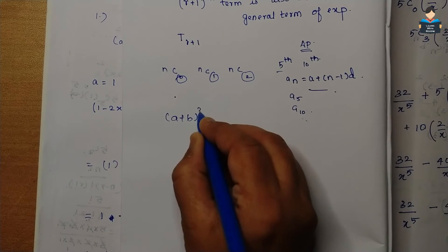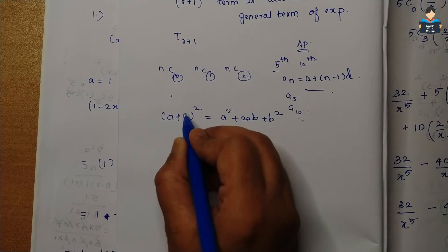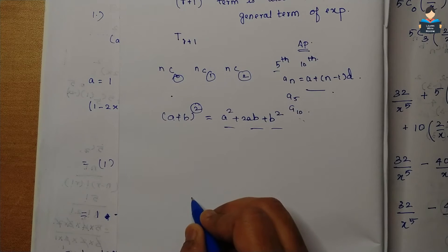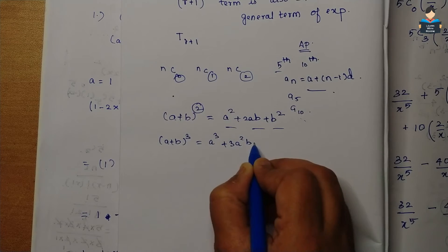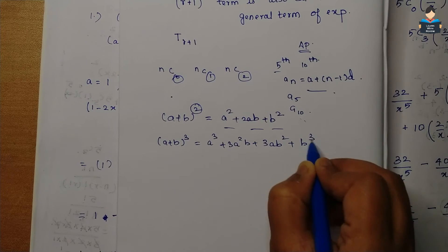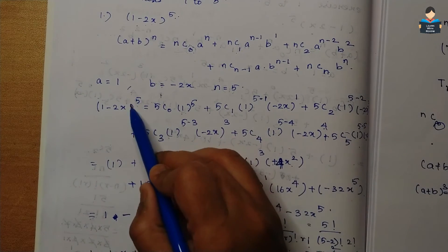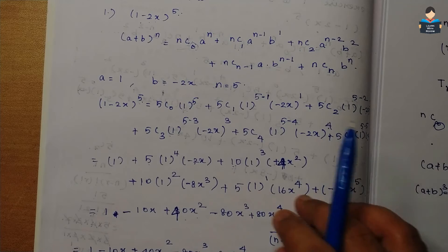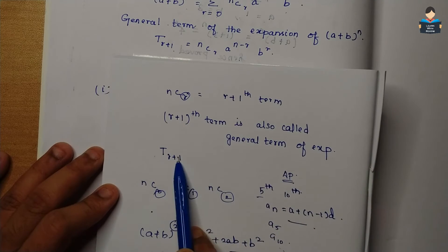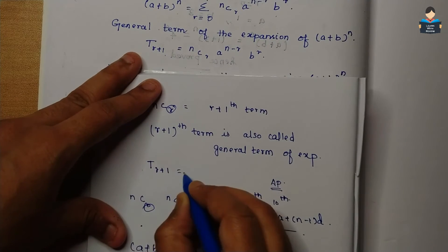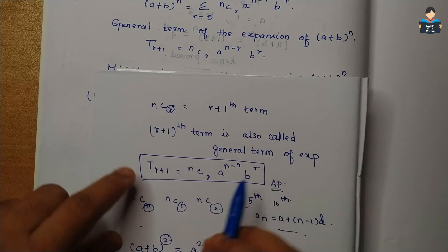We have (a + b) whole square formula: a² + 2ab + b², and n = 2 gives 3 terms. For (a + b)³: a³ + 3a²b + 3ab² + b³, and n = 3 gives 4 terms. So n = 5 gives 6 terms. The general term formula is: T(r+1) = nCr * a^(n-r) * b^r. This is the general term formula.